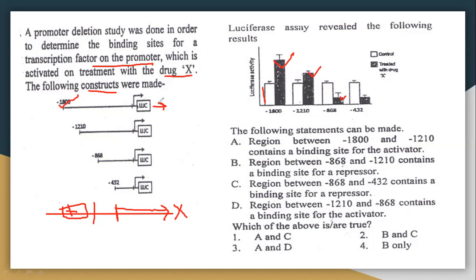For the first construct, we can see that the minus 1800 region has higher expression with drug treatment. Now if this portion is absent — at minus 1210 — the expression is decreased.